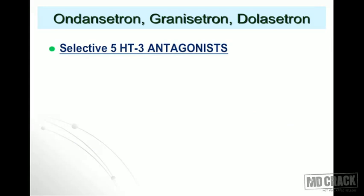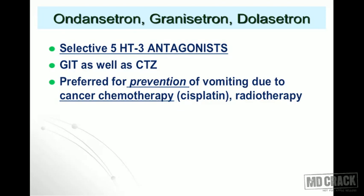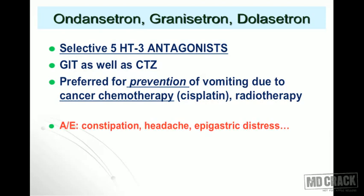Ondansetron, granisetron, and dolasetron are selective 5-HT3 antagonists. They act on both the GIT and the CTZ. They are the preferred agents for prevention of vomiting due to cancer chemotherapy, especially cisplatin. They are also useful to prevent vomiting due to radiotherapy. Adverse effects of ondansetron and granisetron include constipation, headache, and epigastric distress.